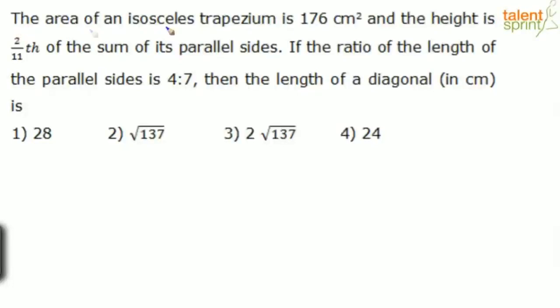The question says the area of an isosceles trapezium. What is an isosceles trapezium? The two non-parallel sides in this trapezium would be equal. So the area of this isosceles trapezium is 176 cm² and the height is 2/11 of the sum of its parallel sides. If the ratio of length of the parallel sides is 4:7, then the length of a diagonal is 28, root 137, 2 root 137, or 24.